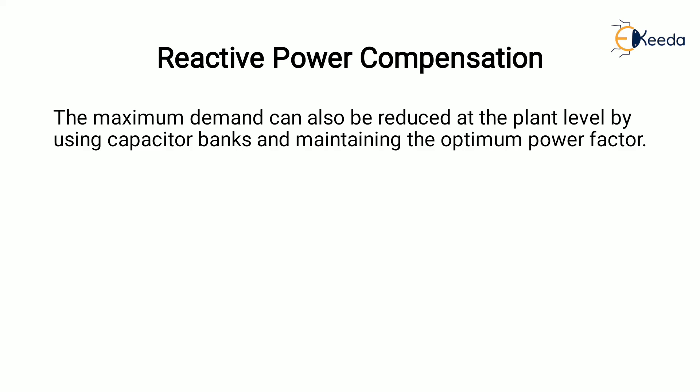The last step is reactive power compensation. The maximum demand can also be reduced at the plant level by using a capacitor bank and maintaining the optimum power factor. By switching the capacitor bank on and off, the desired power factor of the system is maintained and the maximum demand is optimized. That's it for this video — thank you.